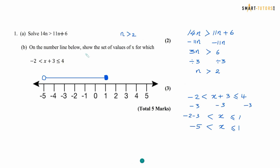Second one: on the number line below, show the set of values of x for which minus 2 is less than x plus 3, less than or equal to 4. Taking away 3 from all parts: minus 2 minus 3 gives minus 5, x plus 3 minus 3 gives x, and 4 minus 3 is 1. So x is between minus 5 and 1. Careful — 1 is also equal, so the bubble must be coloured at 1 but open at minus 5. That's the answer for question number 1, part 2 — a 3-mark question.